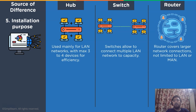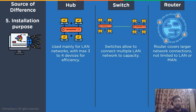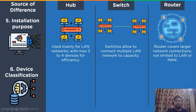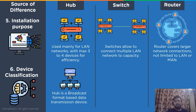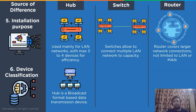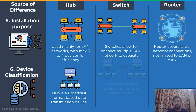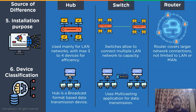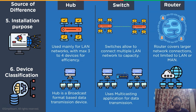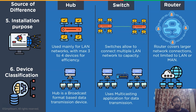A router is also designed to connect internet to any device. The next difference is device classification. In the case of a hub, it uses a broadcast format to transmit data over the communication channel due to the absence of any processing unit. In the case of a switch, it uses multicasting for the transmission of data. In the case of a router, it uses a routing path from a routing table to transmit the data in the communication channel.